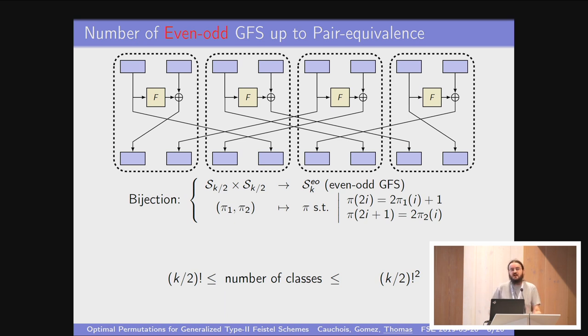This means that the number of classes is trivially upper bounded by how many permutations you have. The lower bound actually comes from the fact that since you're using equivalence relation on the SEO set, which have K over two factorial squared elements, and you have equivalence up to a set with K over two elements, you have in total at least K over two factorial equivalence classes.